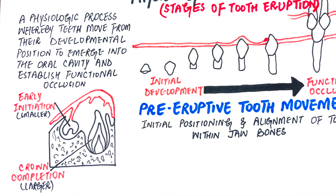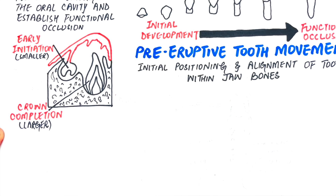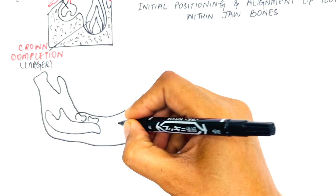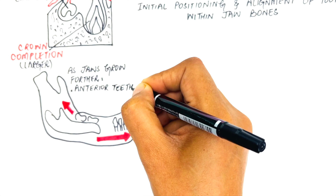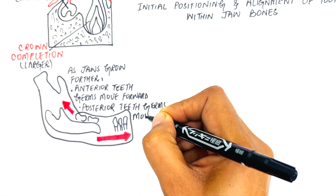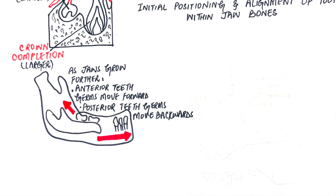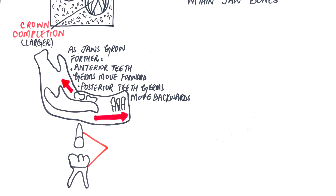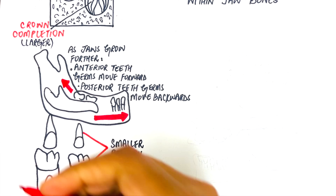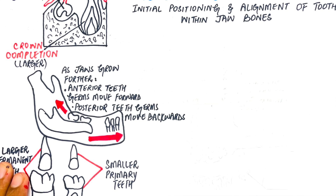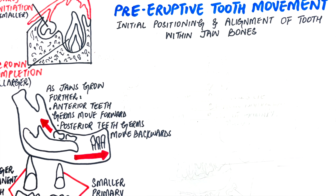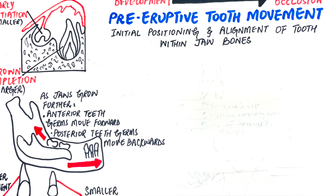As the tooth germs increase in size, the jaws also have to grow. This causes the primary anterior tooth germs to move forward and the primary second molar tooth germ to move backward. The differential movement of the anterior and posterior tooth germs is important, as the much bigger sizes of the future permanent dentition require extra space where they can erupt in a well-aligned position. This is why tooth germs have to move back and forth to prepare themselves to fit in the right position later.